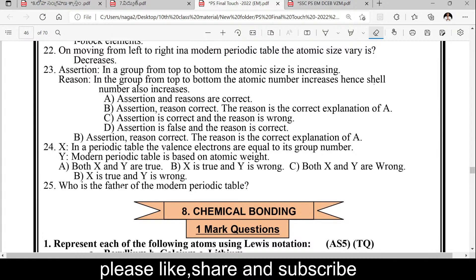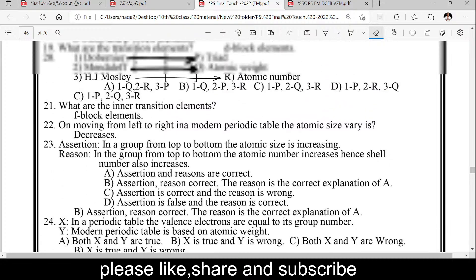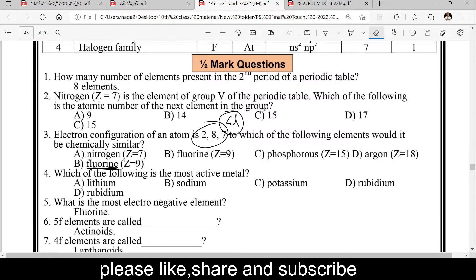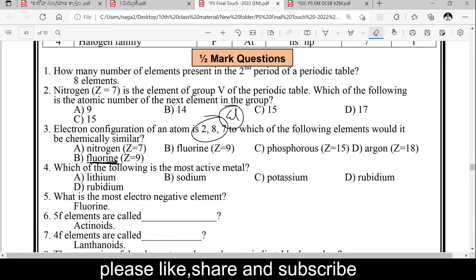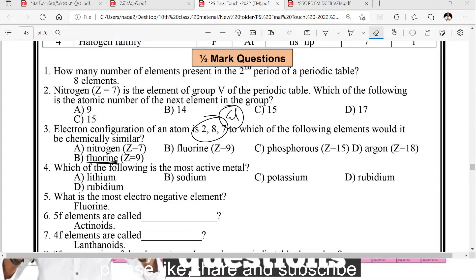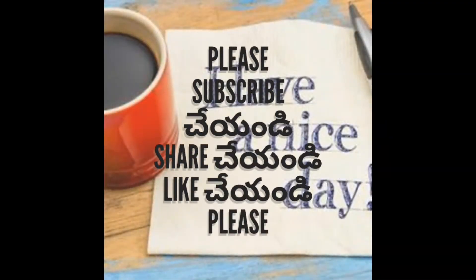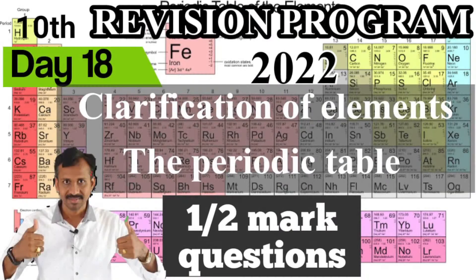Who is the father of the modern periodic table? Mendeleev is the father of the modern periodic table. This is an important half-mark question. Thank you for watching. Jai Hind, Vande Mataram. Have a nice day.